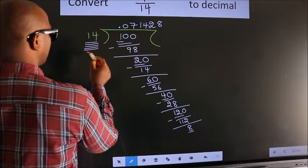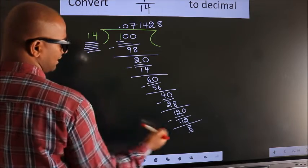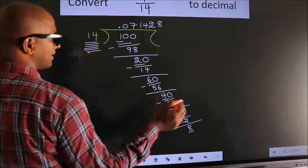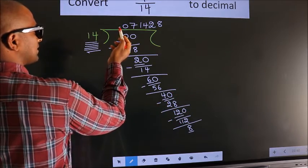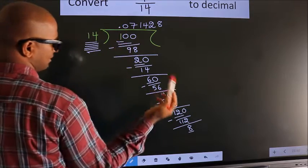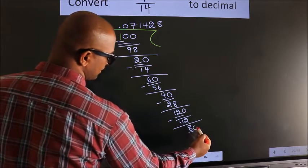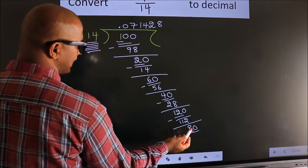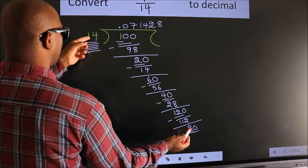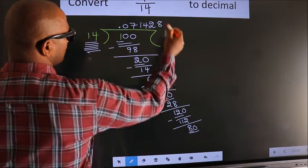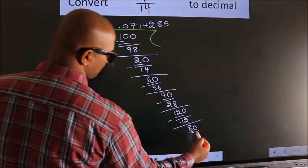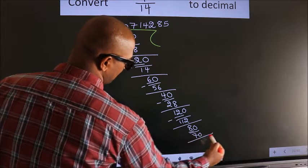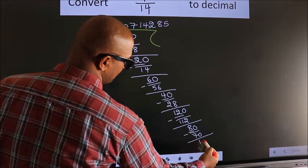Here we have 8, here 14. 8 is smaller than 14, and we already have the decimal, so we can directly take 0. So 80. A number close to 80 in the 14 table is 14 fives, 70. Now we subtract and we get 10.